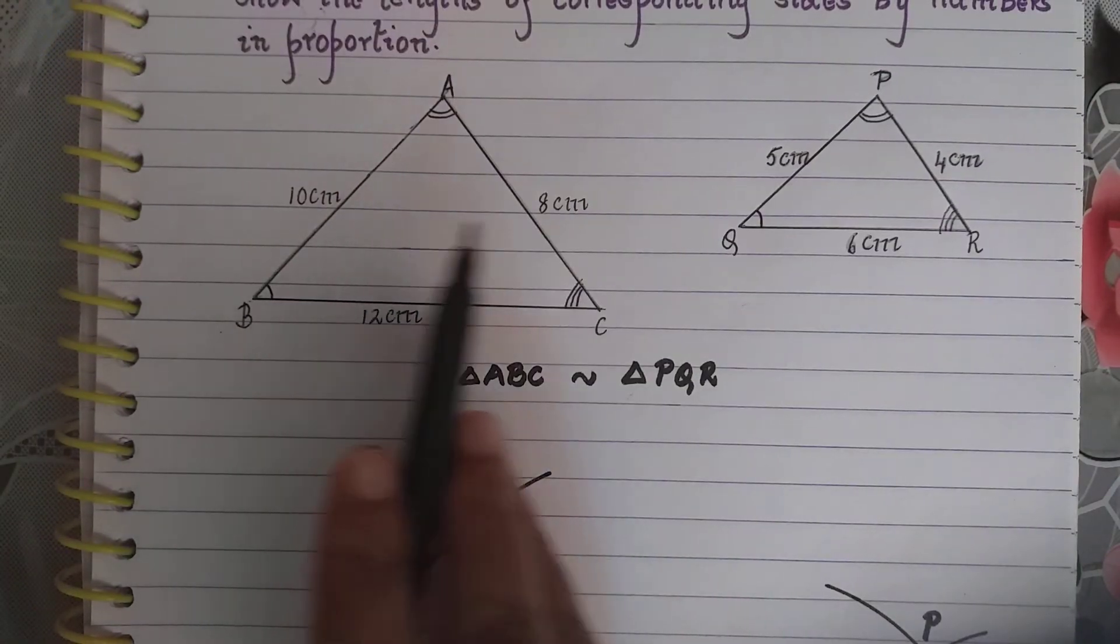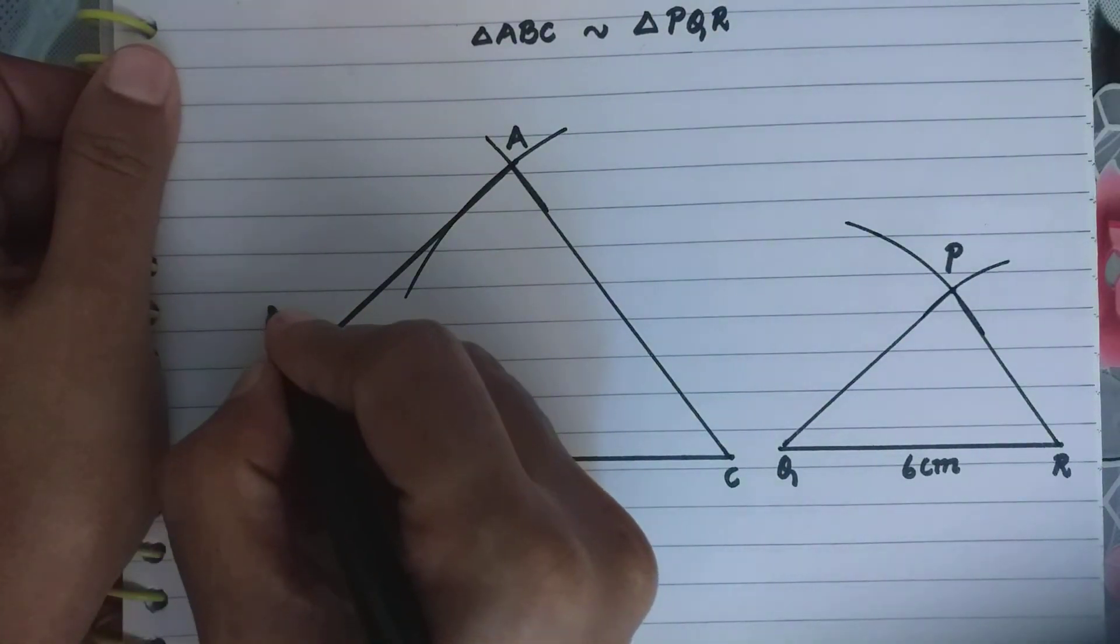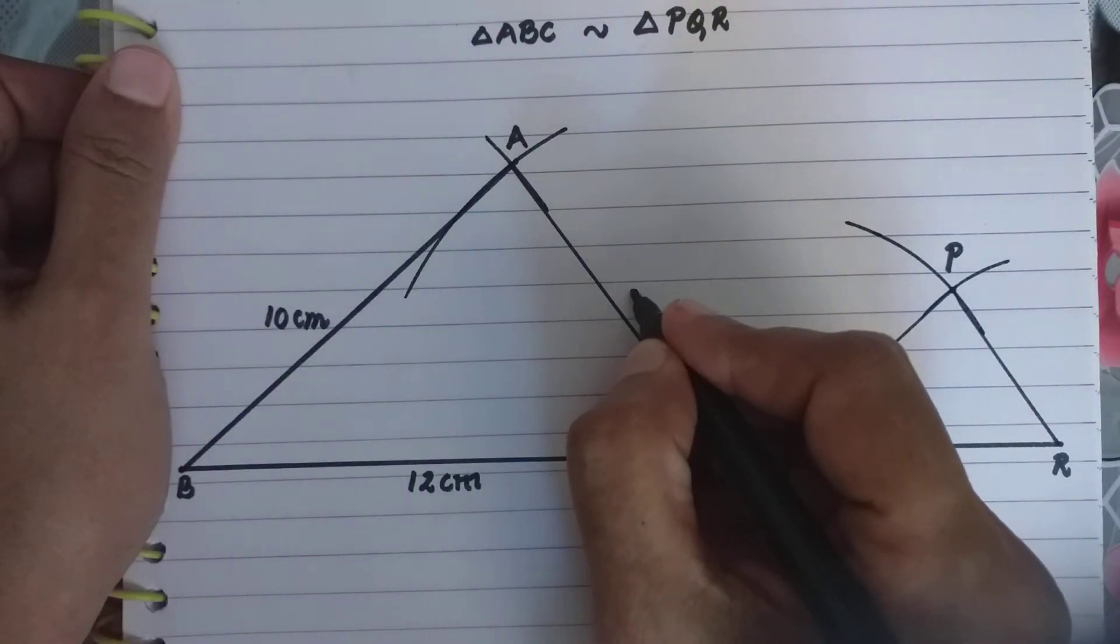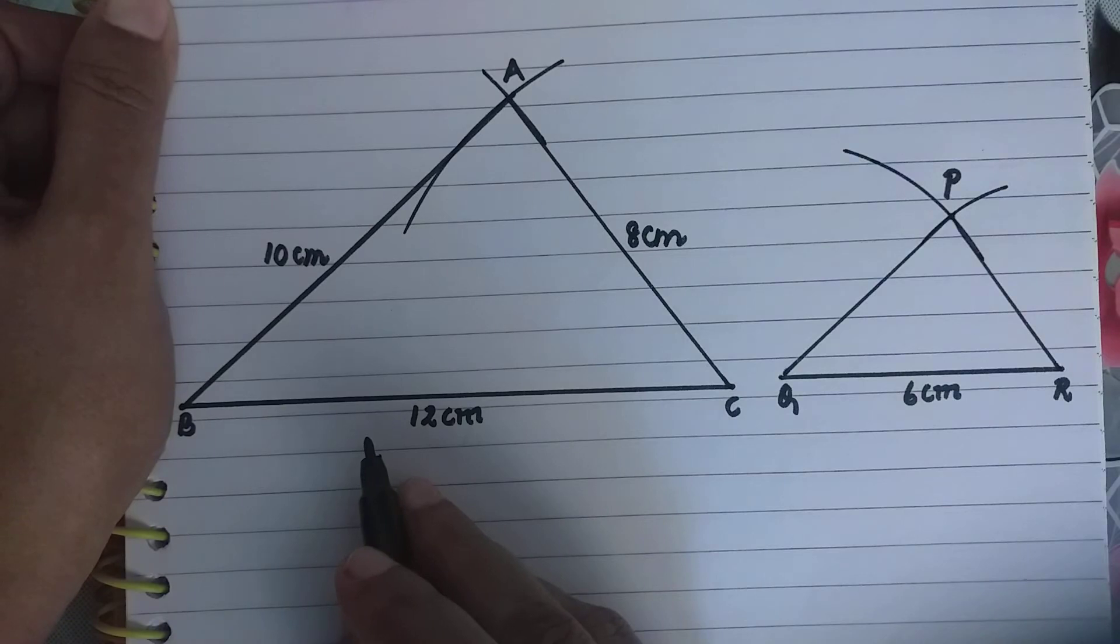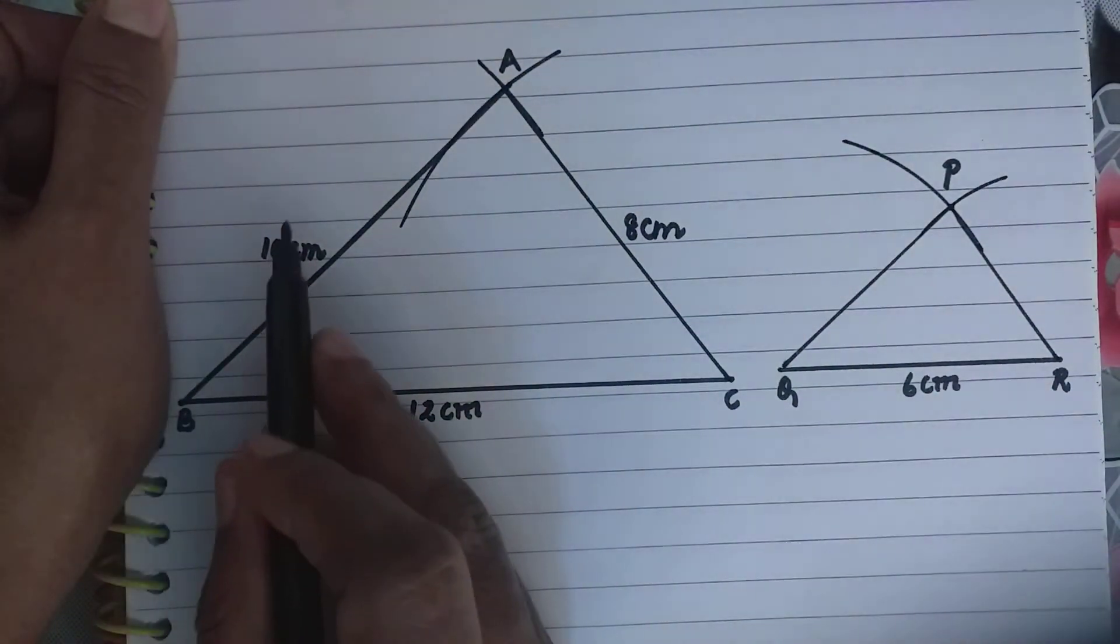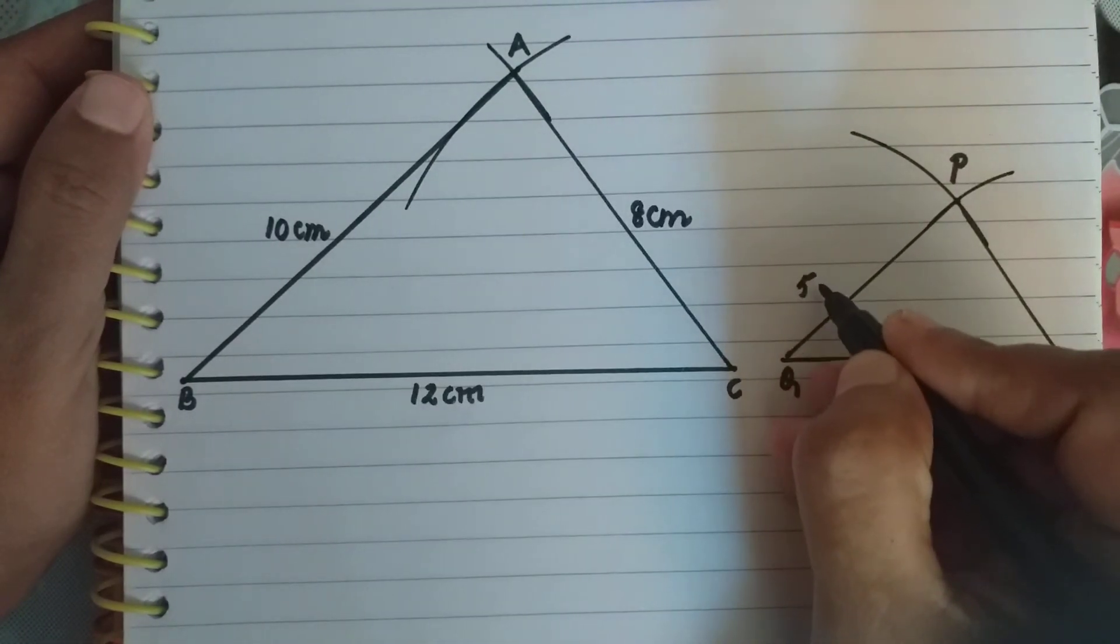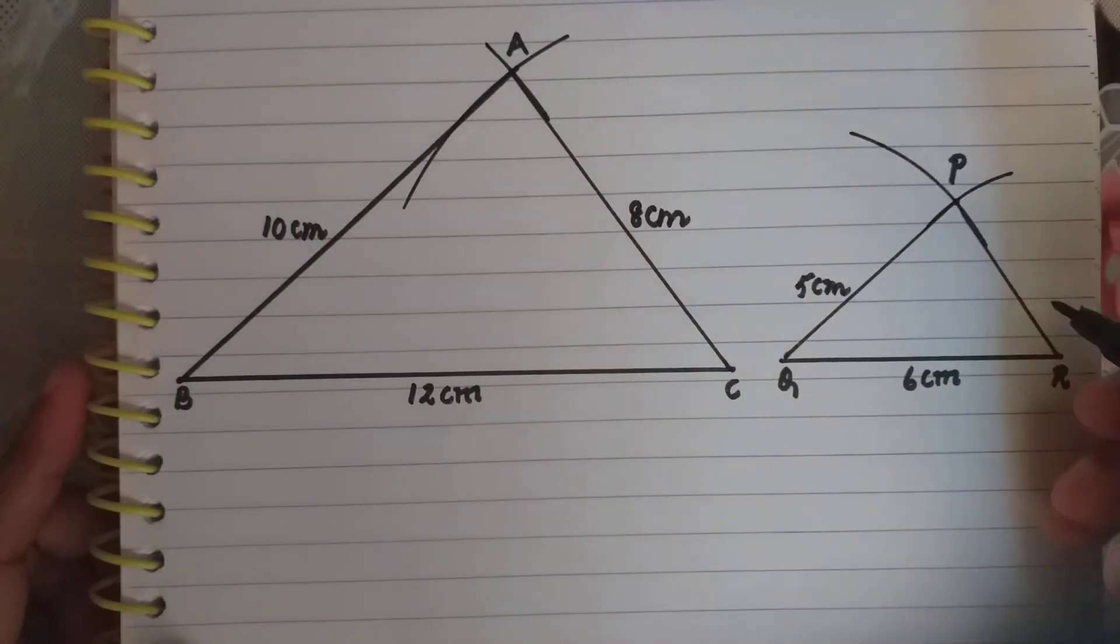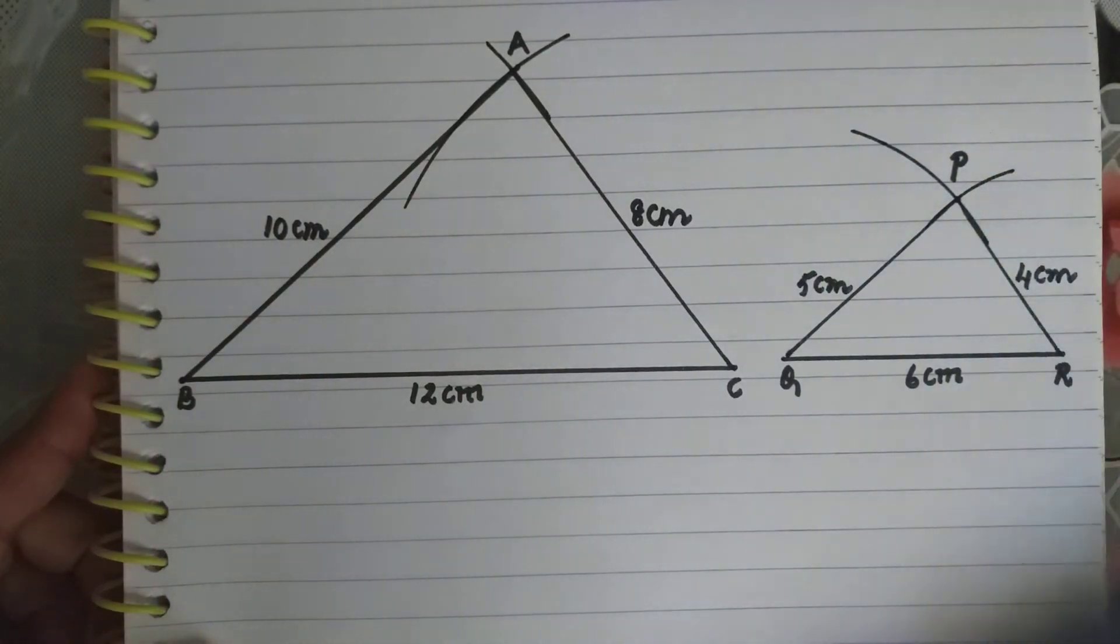So I have the two triangles. Now I have to write the lengths. Here AB is 10 cm and AC was 8 cm. BC is 12 cm. For the smaller triangle, PQ is 5 cm, QR is 6 cm, and PR is 4 cm.